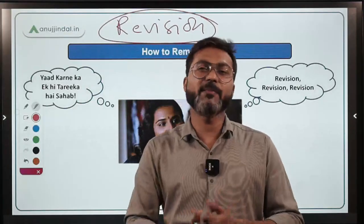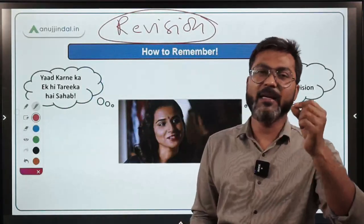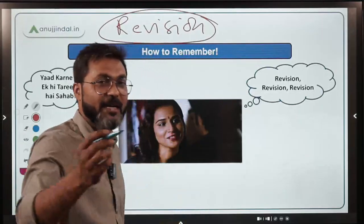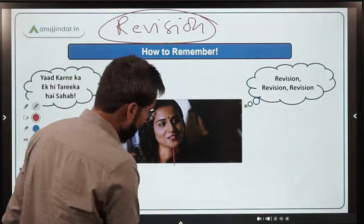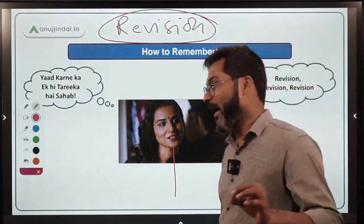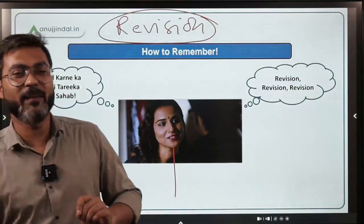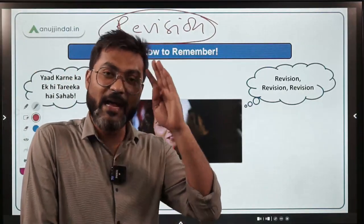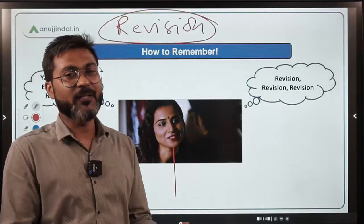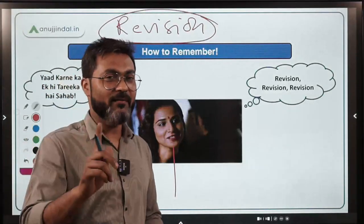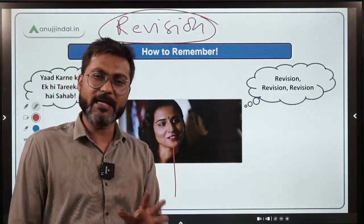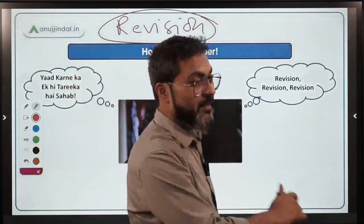I don't remember a scheme until I've read it 5 to 6 times. Think about it — when your parents told you your own name, could you remember it in one go? You couldn't even remember the spelling of your name in four days. So how can you expect to learn an entire scheme in one reading and recall it perfectly? It's not possible. There is only one way: revision, revision, revision — nothing more than that. Read one thing five to six times, only then will it stick.